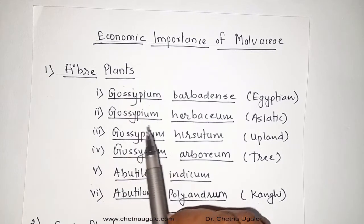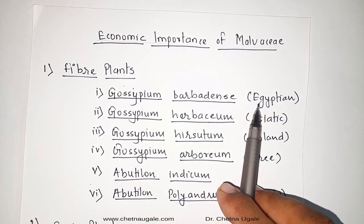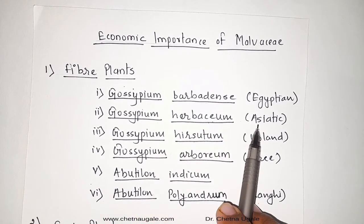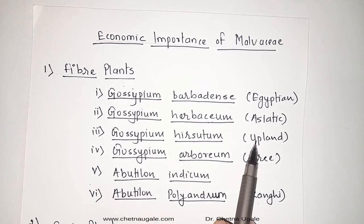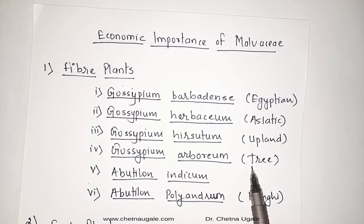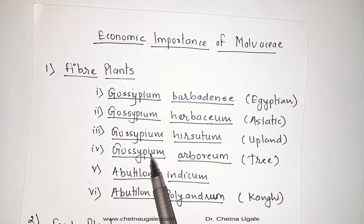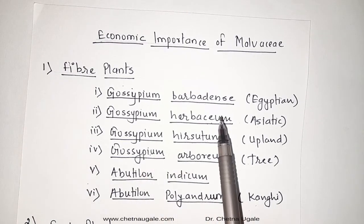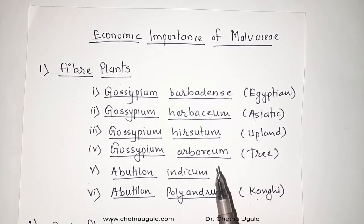Let's look at the fiber plants, as the Malvaceae family is a fiber-yielding family. The important species which yield fibers are: Gossypium barbadense, also called Egyptian cotton; Gossypium herbaceum, called Asiatic cotton, which is largely cultivated in India, specifically in Maharashtra and central India; Gossypium hirsutum, the American cotton, which is also cultivated in India; and Gossypium arboreum, the only tree species which yields cotton, commonly called tree cotton. These four species are the main species which yield cotton fibers, widely used for making fabrics such as shirts and dresses.